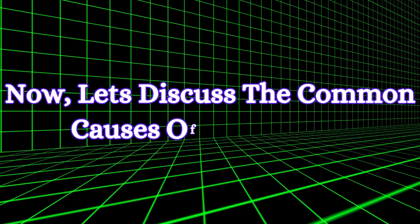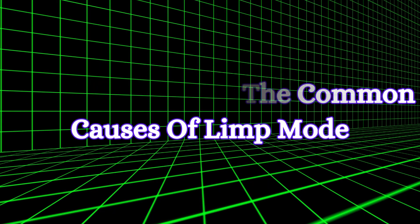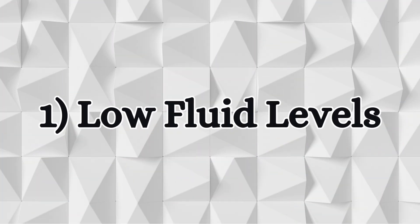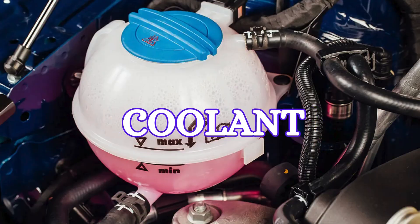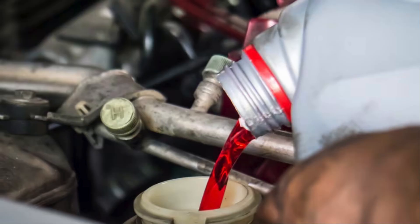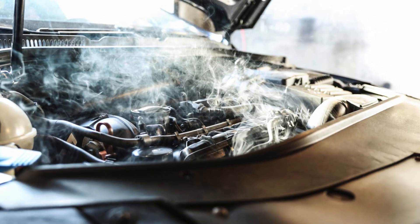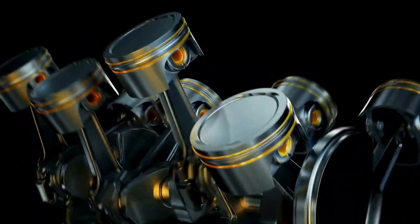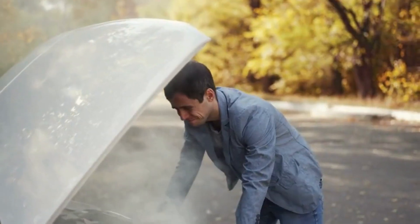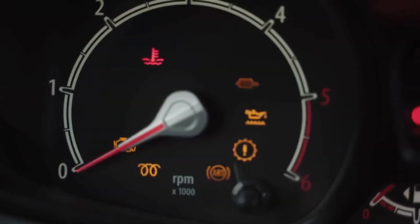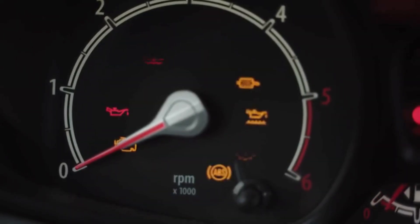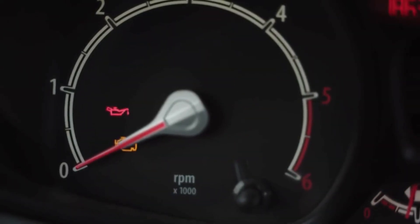Now let's discuss the common causes of limp mode. One: low fluid levels. Fluids like engine oil, coolant, and transmission fluid are essential for lubrication and temperature regulation. Low levels can lead to overheating, increased friction, and eventual failure of engine or transmission components. Limp mode is activated to prevent the engine from running under these risky conditions.